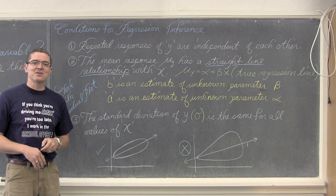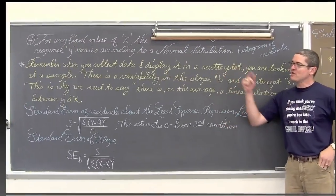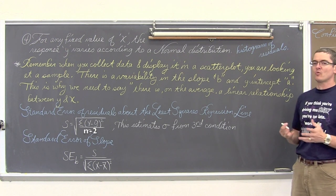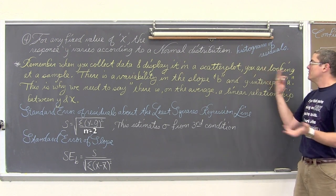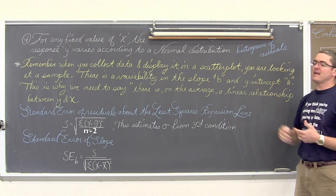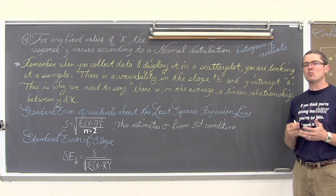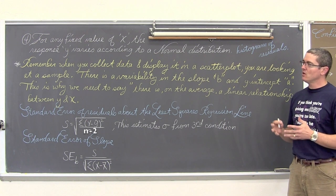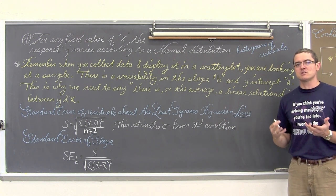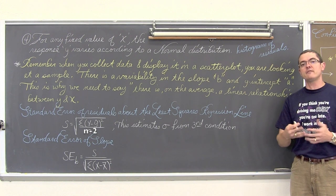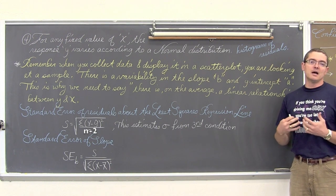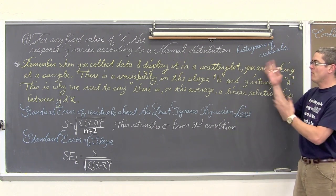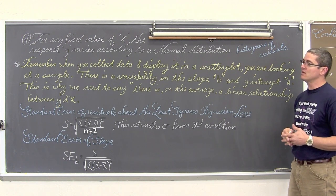For the fourth check: for any fixed value of x, the response y varies according to a normal distribution. It is possible to make histograms with residuals if you have enough data, but a lot of times in the textbook or on the AP exam they don't give us enough data to actually check for this normality. So you just have to state in your assumptions that the y values are varying in a normal distribution with x — we just state that we know it is a condition that must be met.